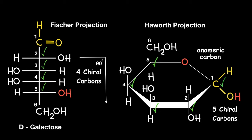So in short, the general rule is that cyclic structures have one more chiral carbon than their corresponding open chain structure for monosaccharides. So when we move from a Fischer projection to a Haworth projection, we increase the number of chiral carbon centers by one.